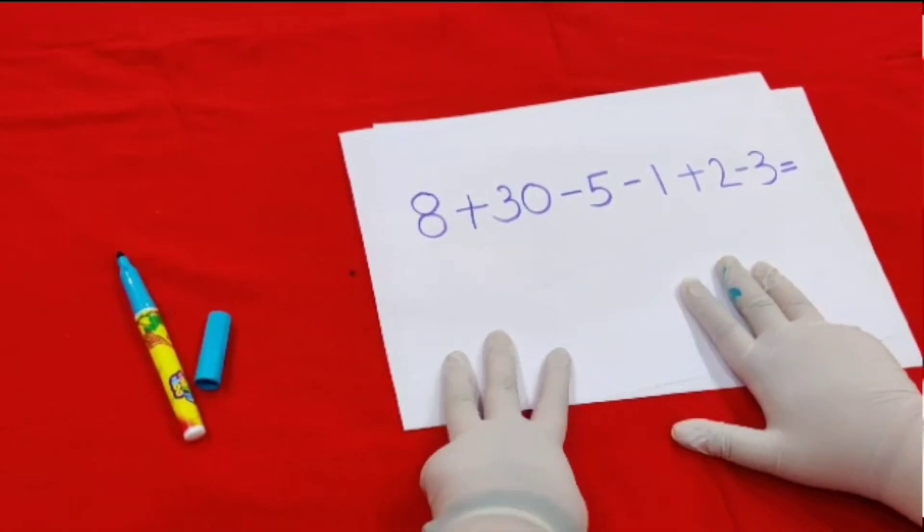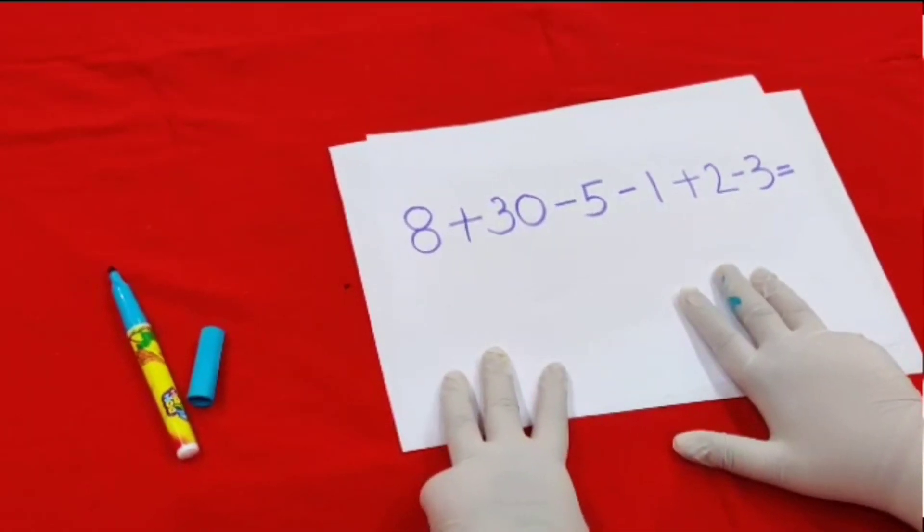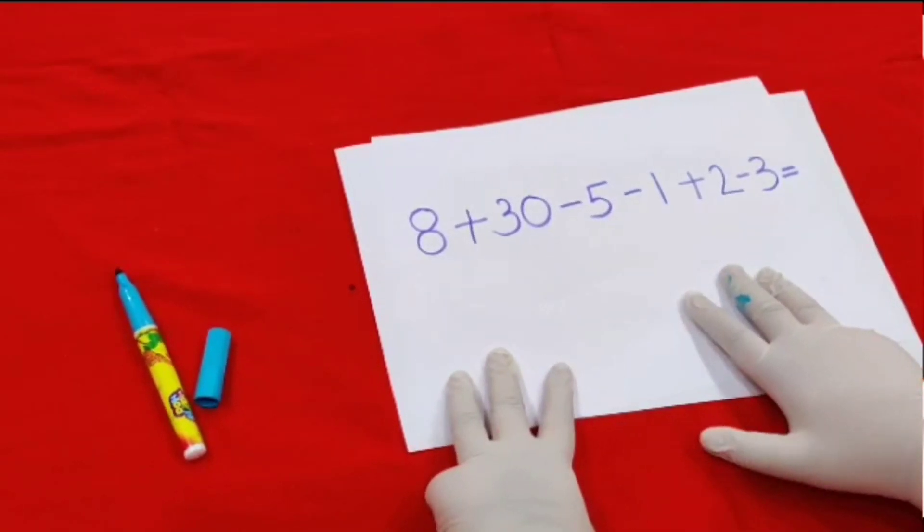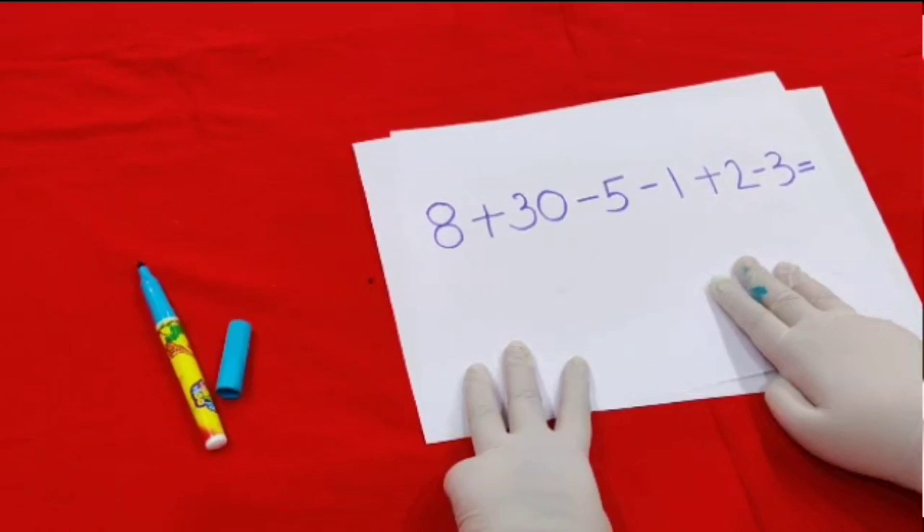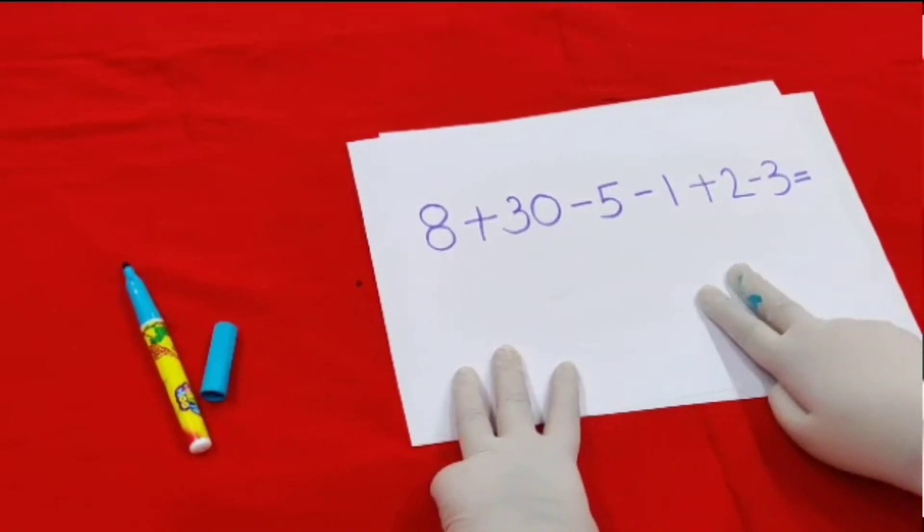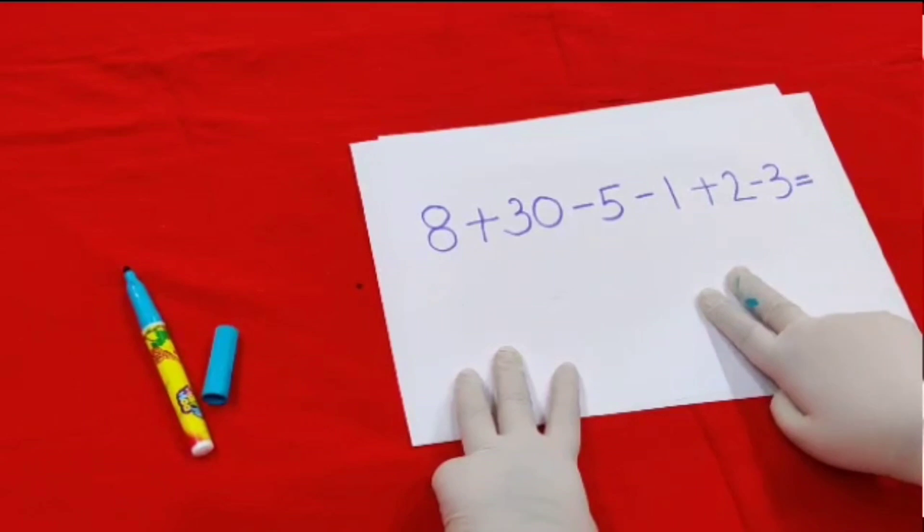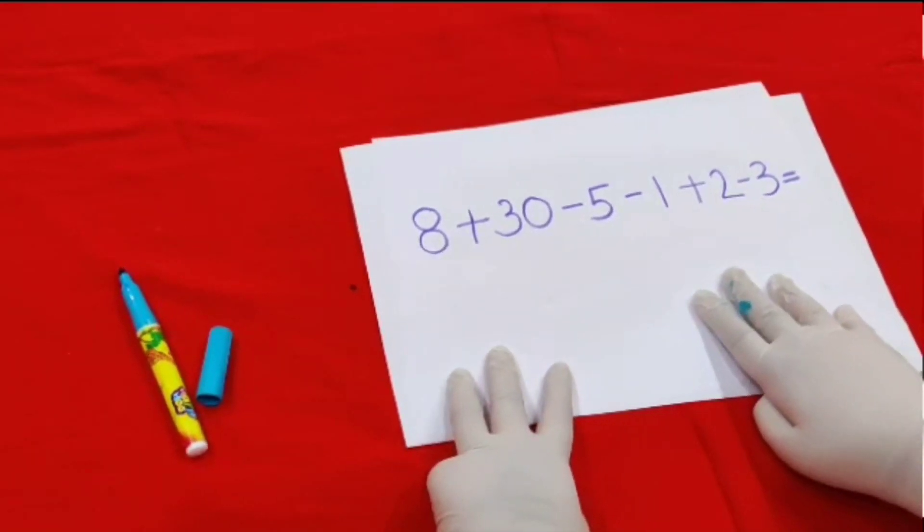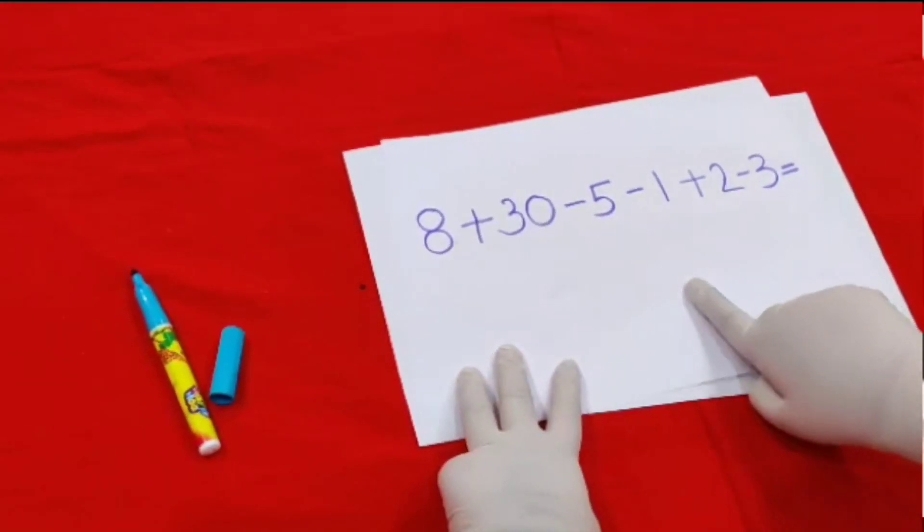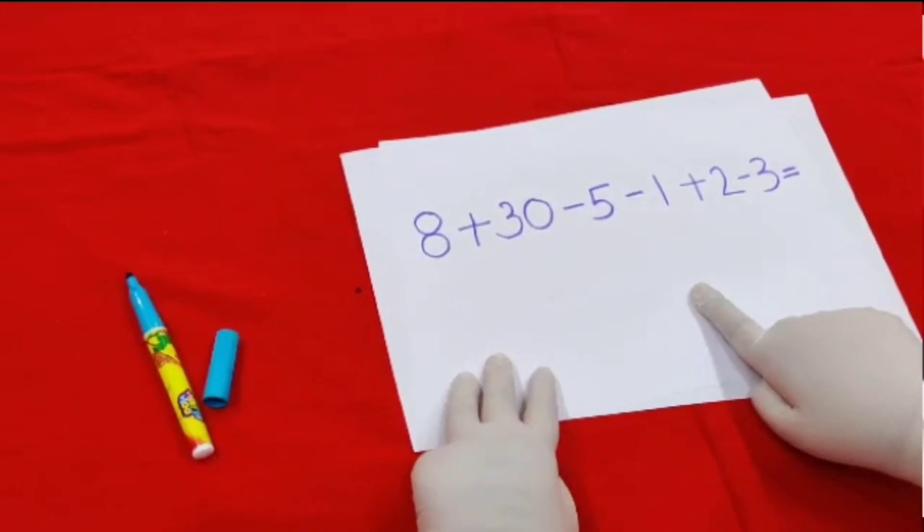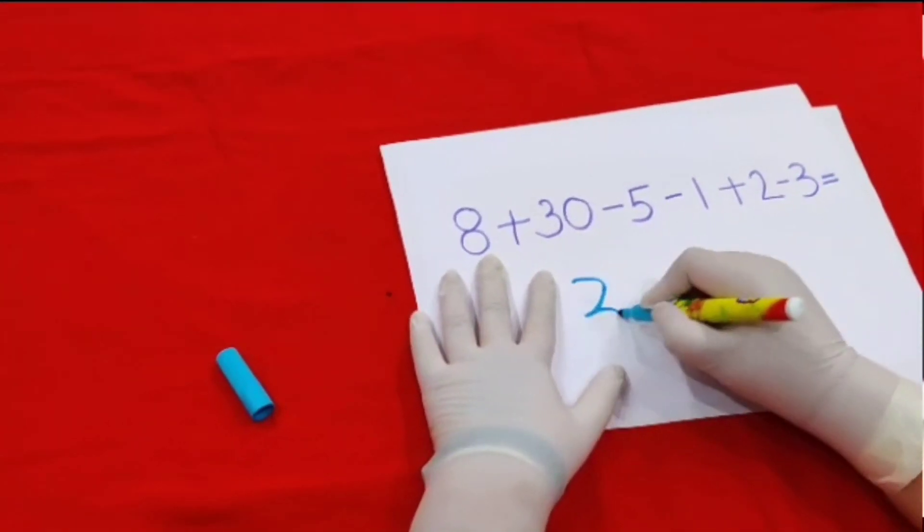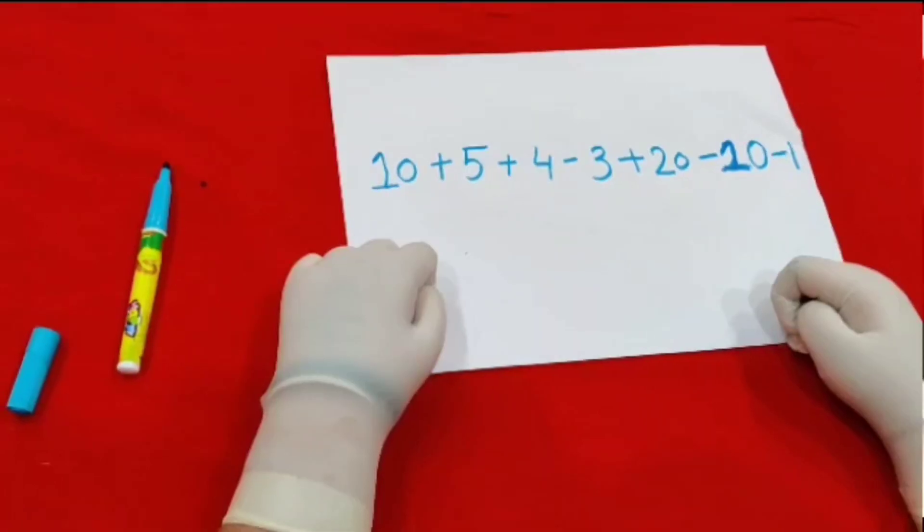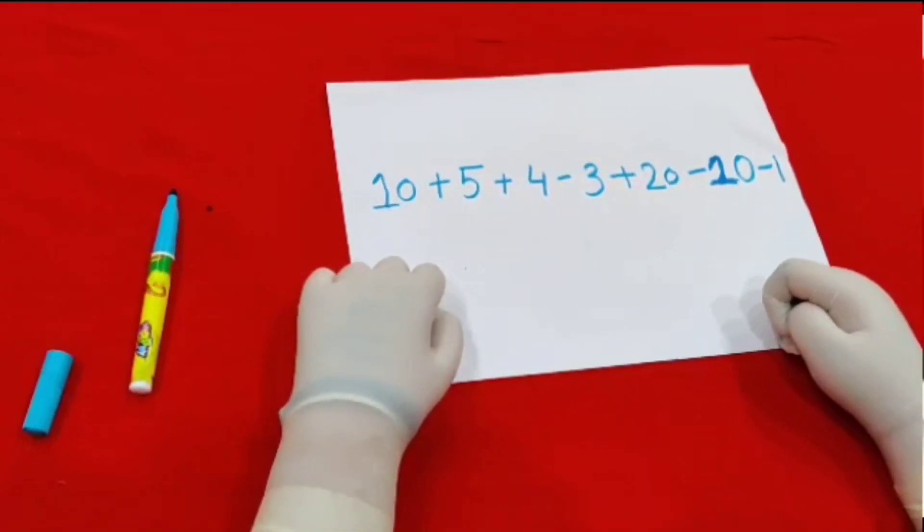And minus 5, minus 5 we will do like this. And minus 1, we will do like this. And minus 3, we will do like this. So the answer of this question is 31. This is our last question for practice.